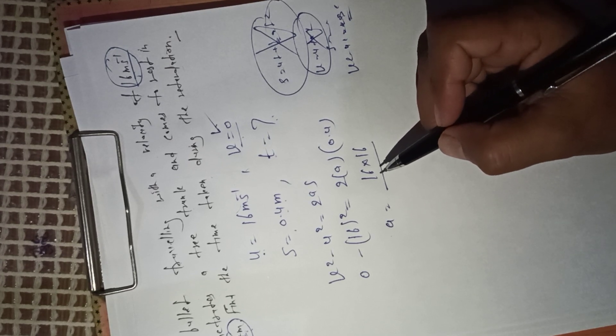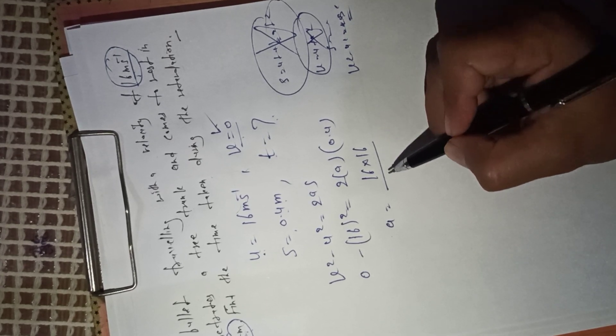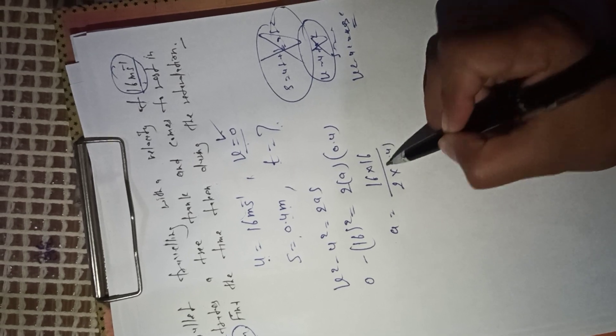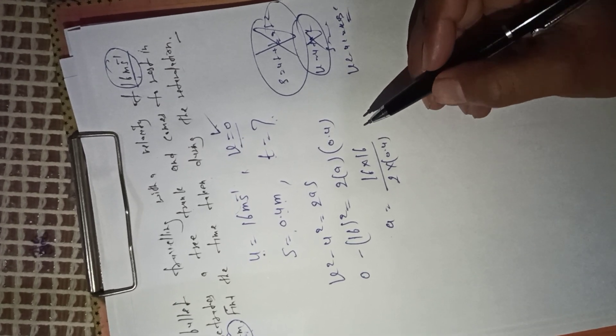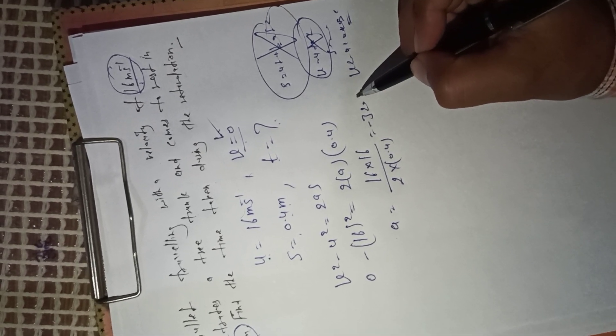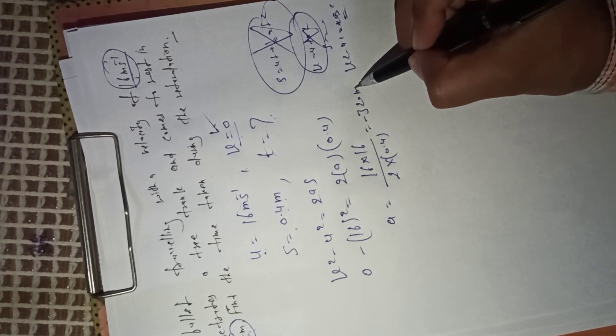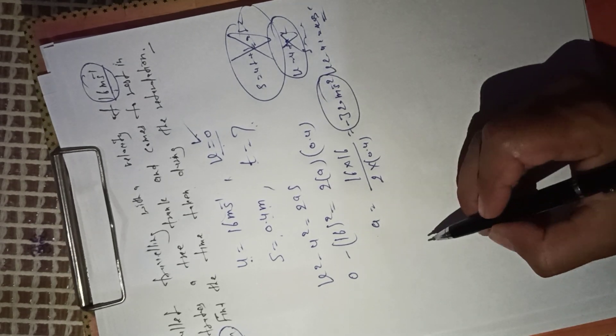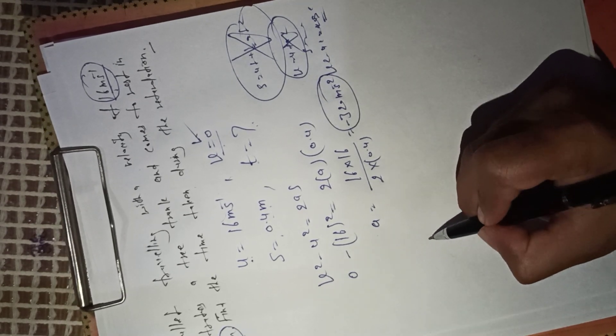16 × 16 divided by 2 × 0.4, and when you calculate this it equals minus 320 meters per second squared. We got the acceleration a. After that, you know the formula: acceleration equals...